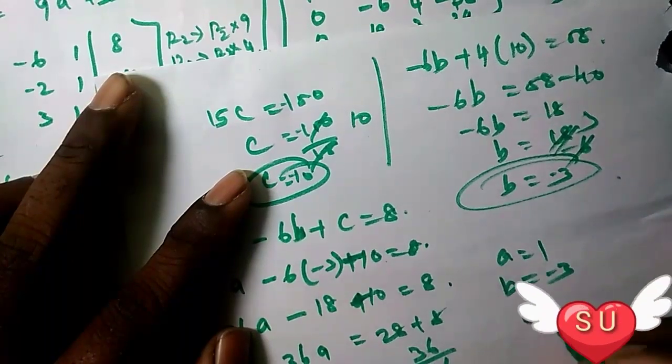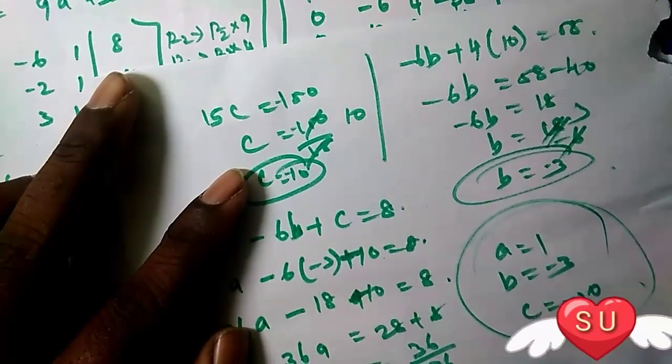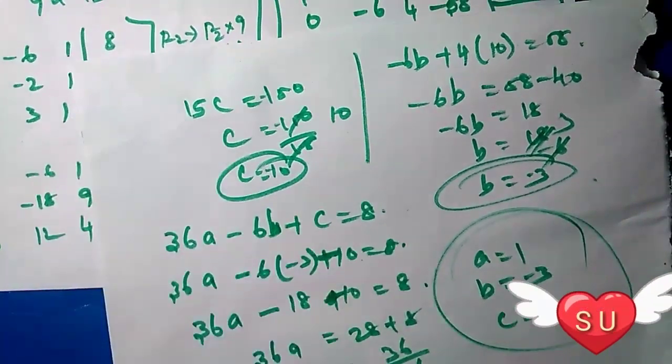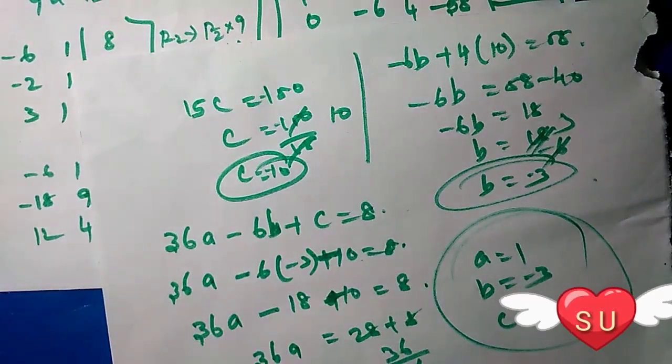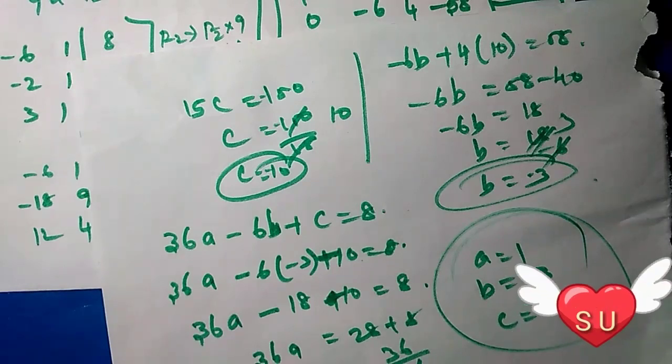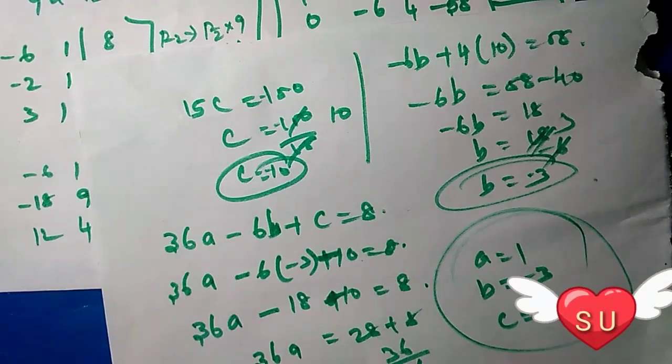Therefore the answer is: a = 1, b = 3, c = -10. This is the answer friends. Please comment, subscribe to the channel.